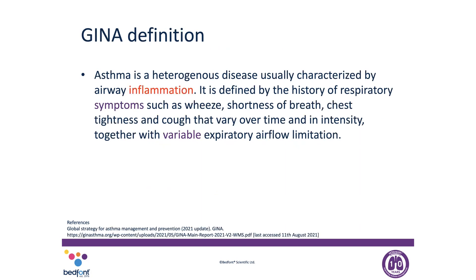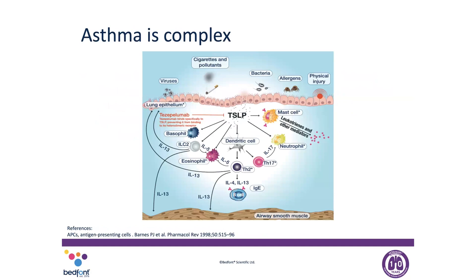It's worth considering GINA — the Global Initiative for Asthma — which gives us worldwide asthma guidelines and comes to the same conclusion. GINA tells us it's a heterogeneous disease characterised by airway inflammation, really picking out that airway inflammation again. It goes on to talk about the symptoms of cough, wheeze, shortness of breath, and chest tightness, and discusses that variable airway inflammation. Asthma is a very complex disease.